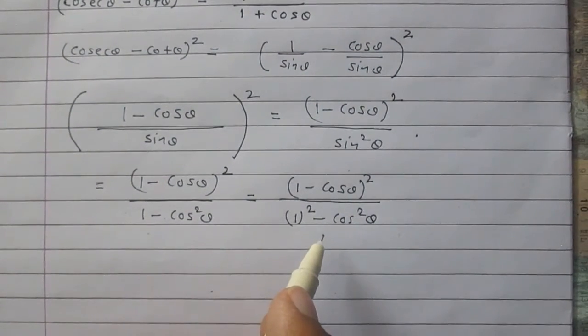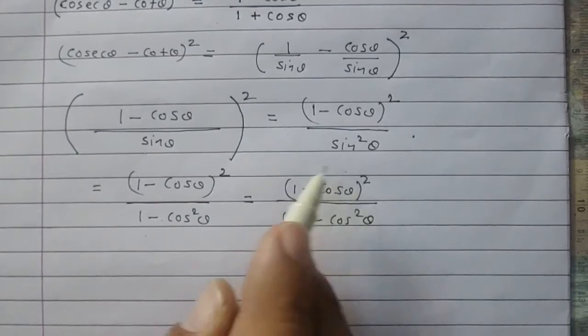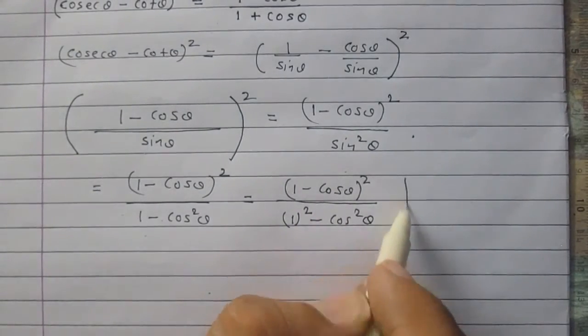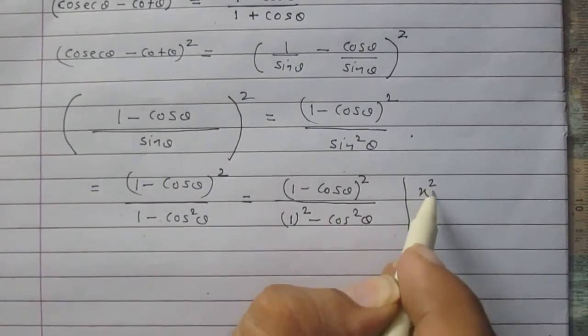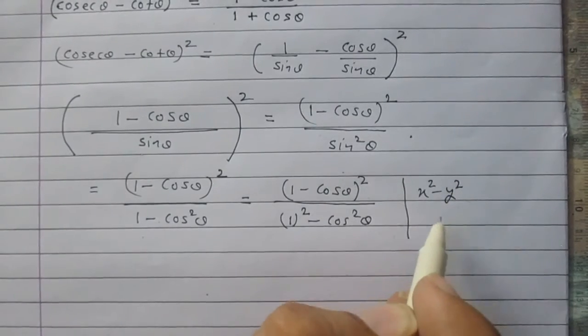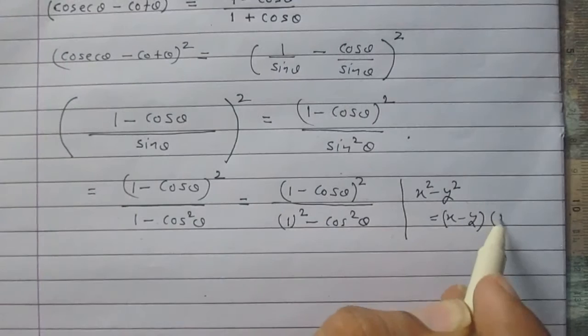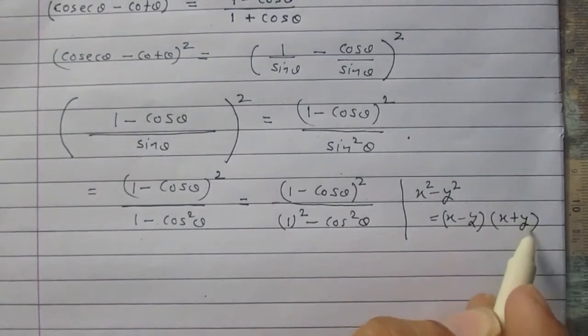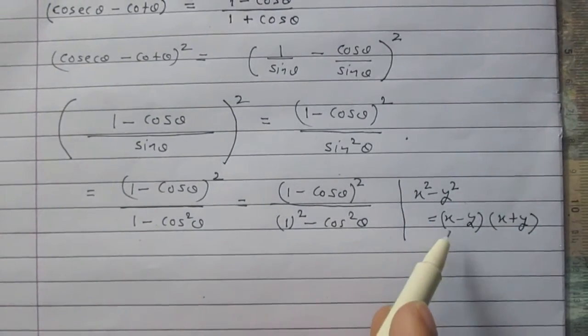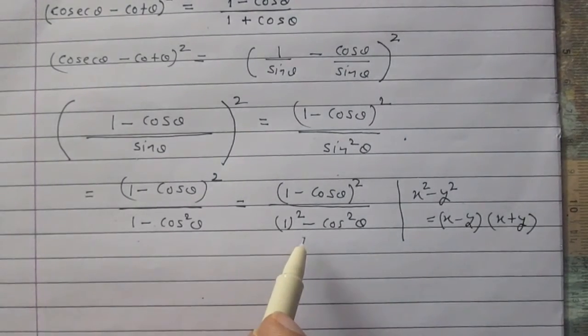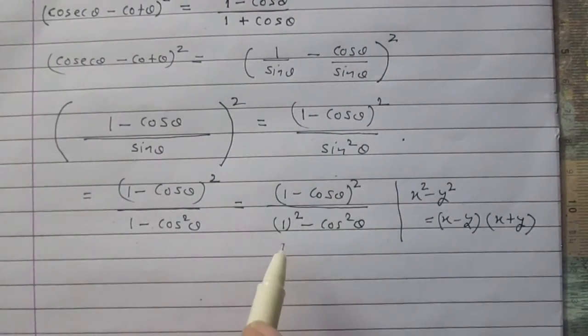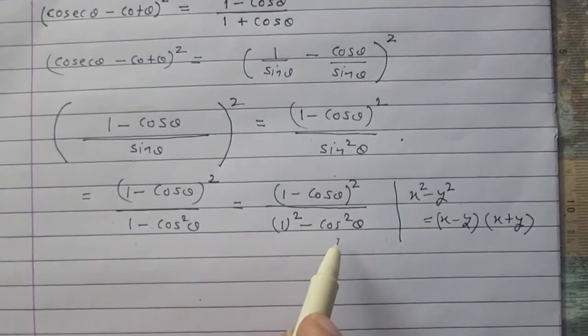Look at the denominator of this term. We see that x square minus y square can be written as x minus y multiplied by x plus y. We can use this identity here in the denominator where x stands for 1 and y stands for cos theta.